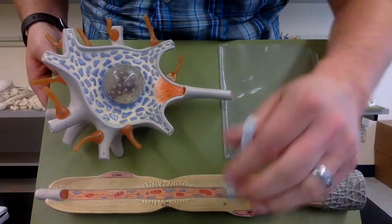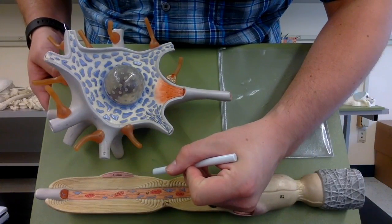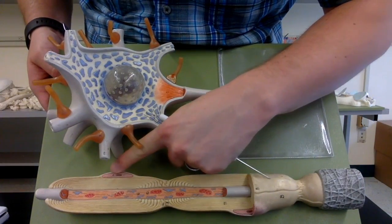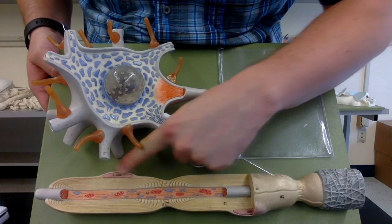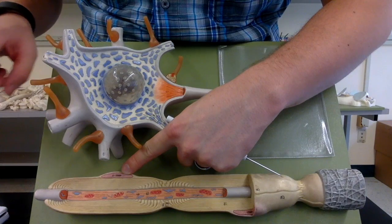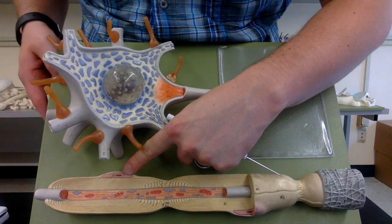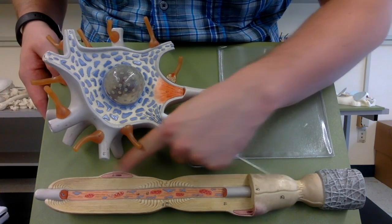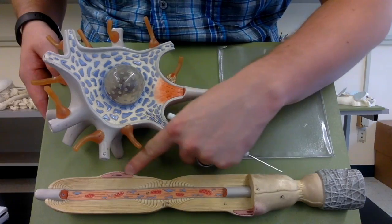So where can we find them on this model? You see this guy right here, this kind of purple structure right here embedded in this white stuff? This is going to be one of two things. So there's two types of neuroglia we're going to talk about.